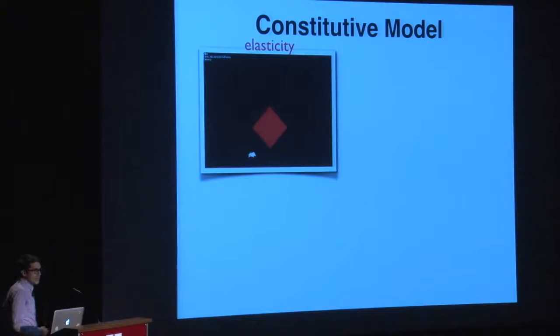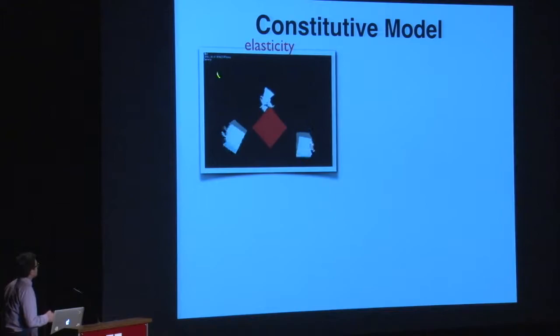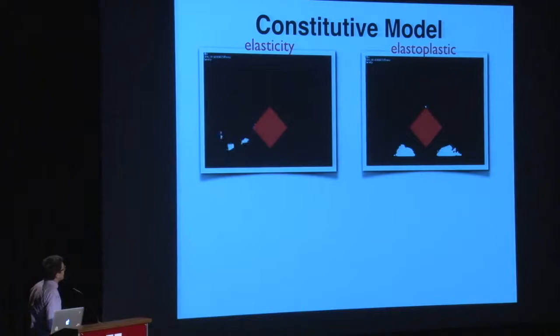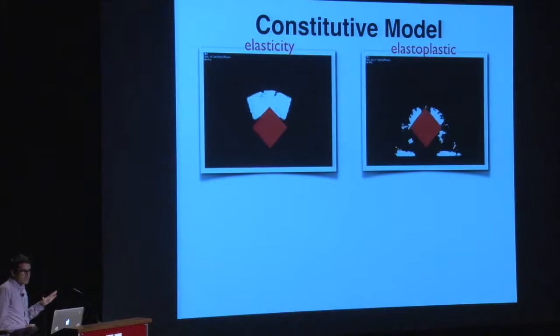If we say the snow just forgets its rest state when deformed too much, adding plasticity, it starts looking a lot better. We added another layer to the plasticity: hardening — capturing the effect that as snow flows plastically, it gets stiffer. Think of taking a snowball and packing it tighter — it gets stiffer. We also add weakening as it expands. That gives us what we used in the final movie: it stiffens as it compacts and hits objects.